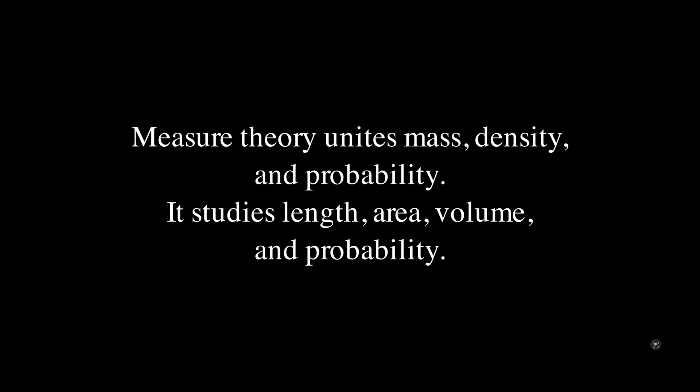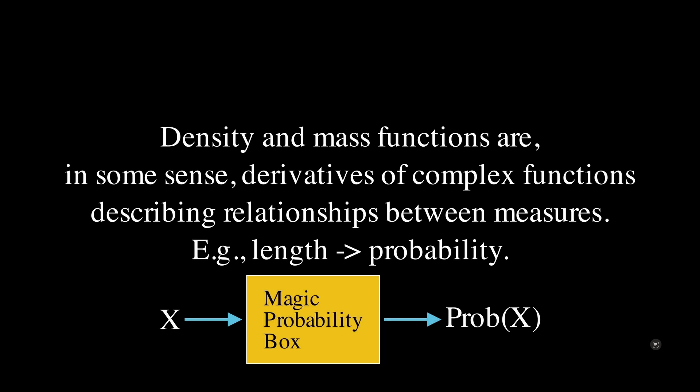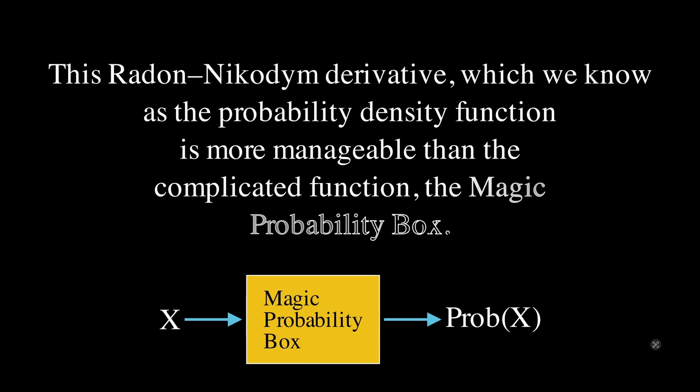Measure theory is the field of mathematics that unites these measures — mass, density, and probability. It studies length, area, volume, probability, and the connections between these different ways to measure things. Density and mass functions are, in some sense, derivatives of complex functions that describe the relationships between different types of measures — for instance, the relationship between length and probability. We want to understand this magic probability box, but we can understand its derivative instead, which is the probability density function. This is called the Radon-Nikodym derivative, which we know as the probability density function — a more manageable function than the magic probability box.